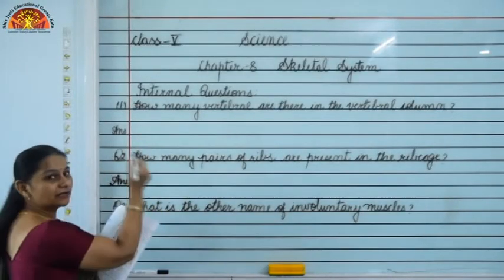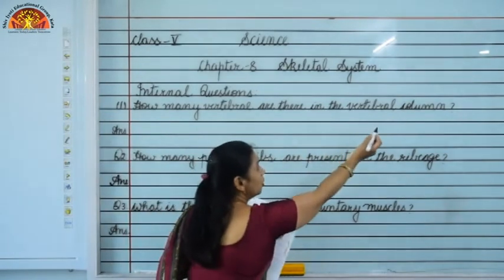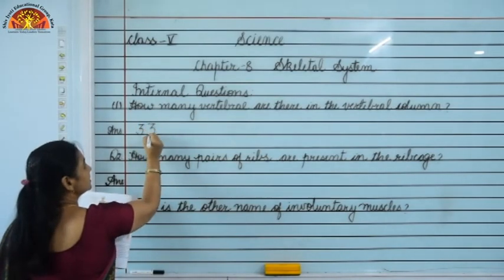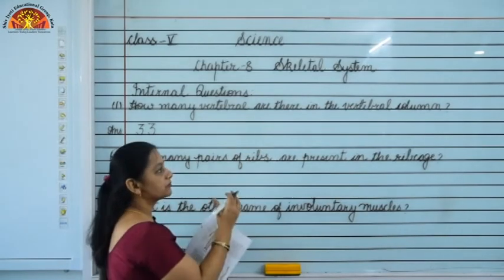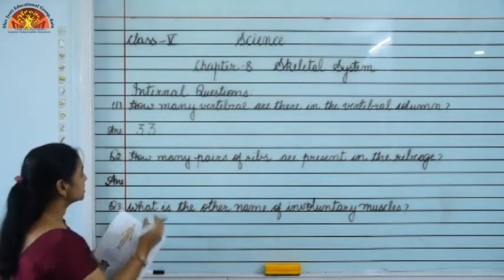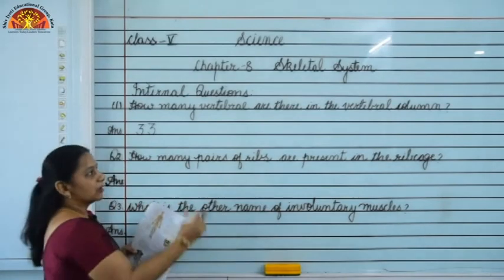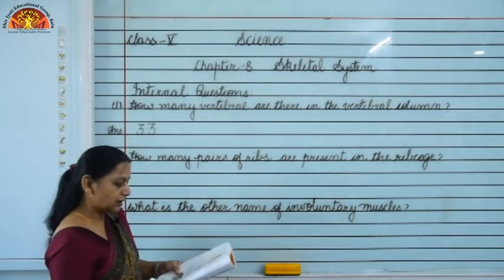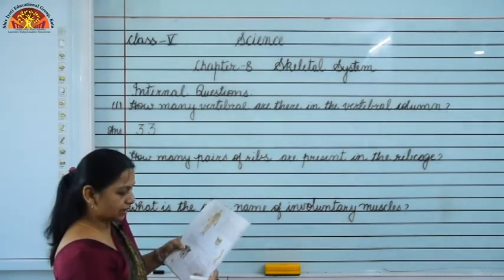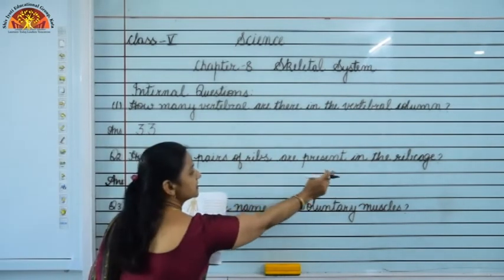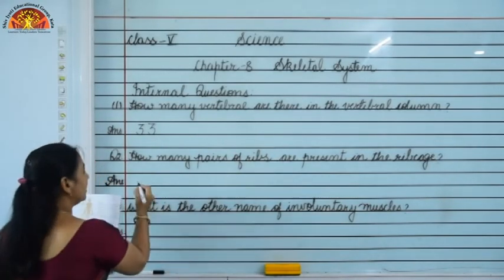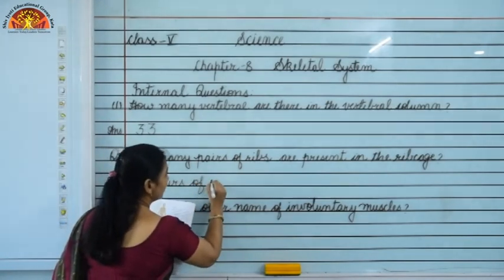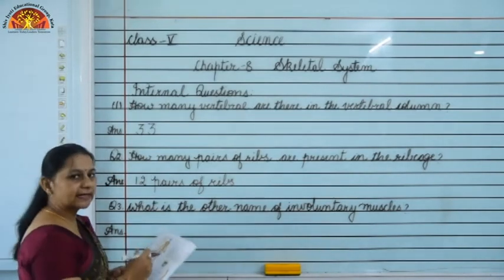Now our internal questions: first, how many vertebrae are there in the vertebral column? In the vertebral column we have 33 small bones called vertebrae, so the answer is 33. Second question: how many pairs of ribs are present in the ribcage? Write both questions on page number 70 — question 1 on the topic backbone and question 2 on ribcage. The answer is 12 pairs of ribs are present in the ribcage.